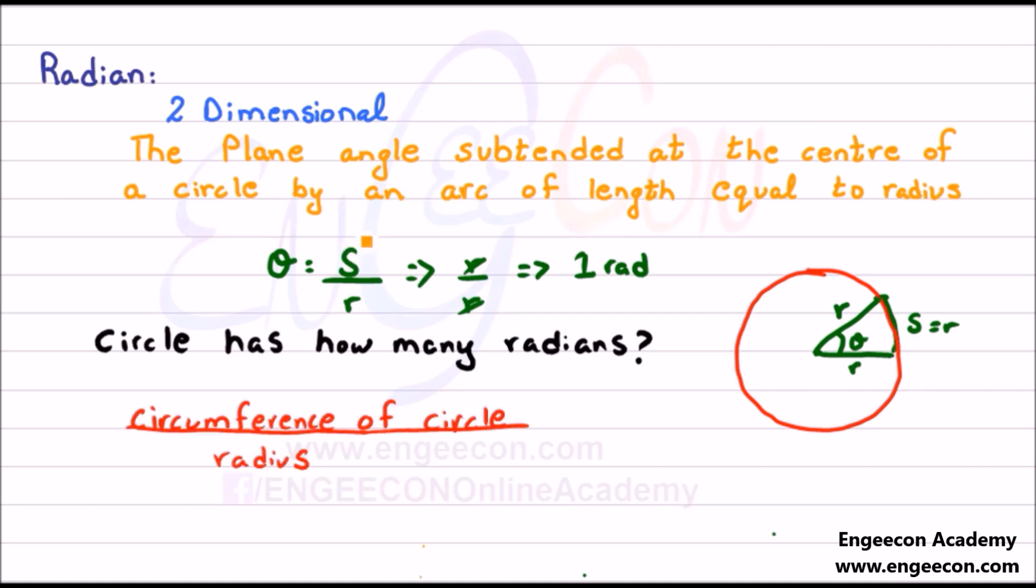We will use the same concept here. The length of an arc is equal to the circumference of the circle. We know that the circumference of the circle is equal to 2πr divided by r. This r will be cancelled out and we're left with 2π. The circle has 2π radians.